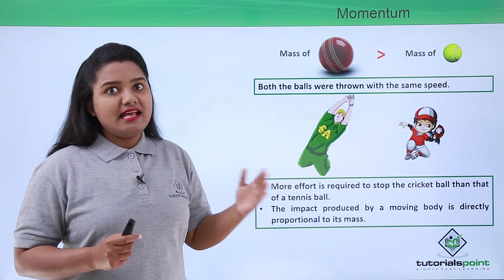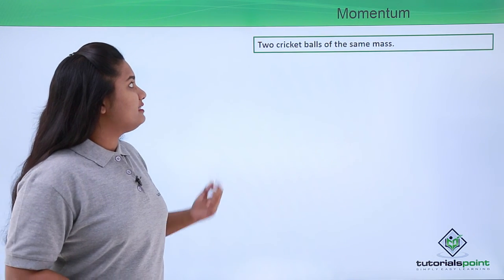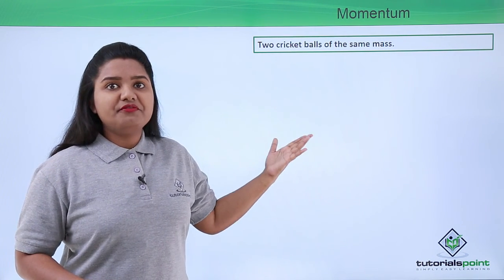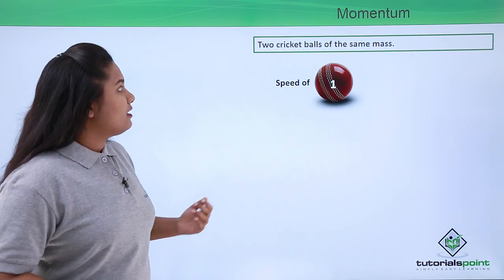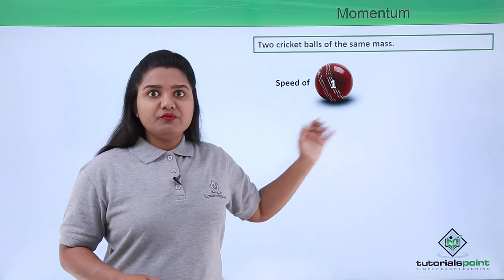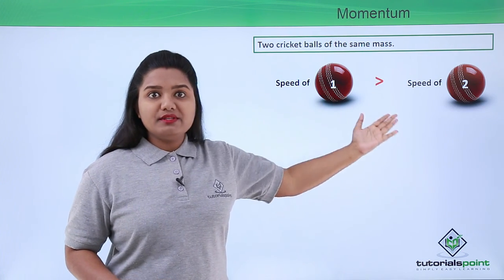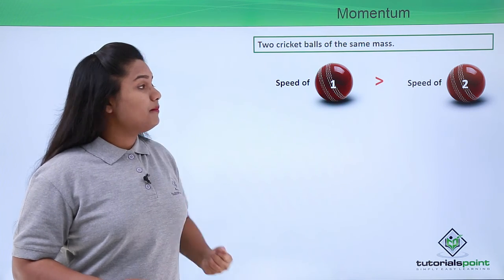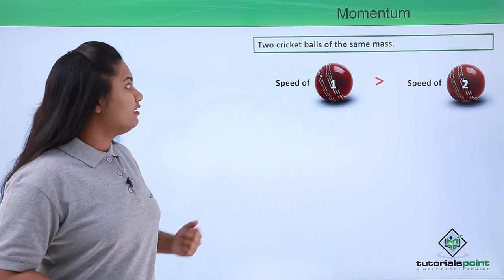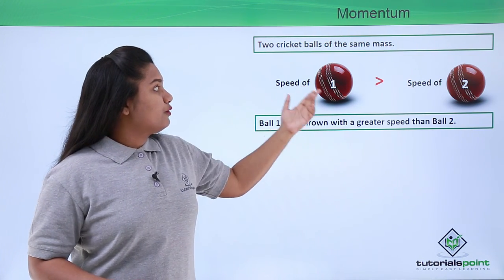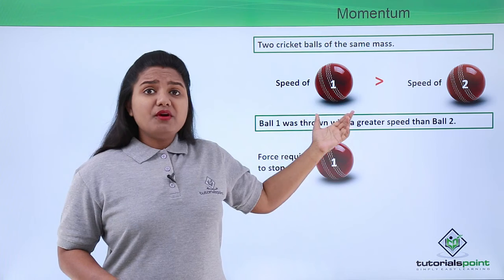Now suppose we have two cricket balls of the same mass. There is no difference in the masses of the two balls, but we will throw them with different speeds. The first ball is thrown with a greater speed compared to the second ball. So the two balls have the same mass but are thrown at different speeds.